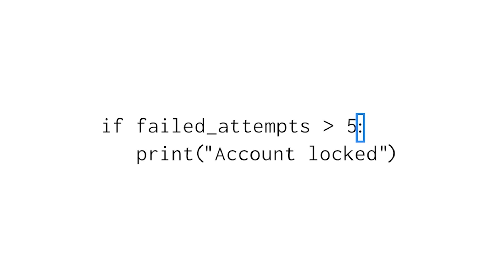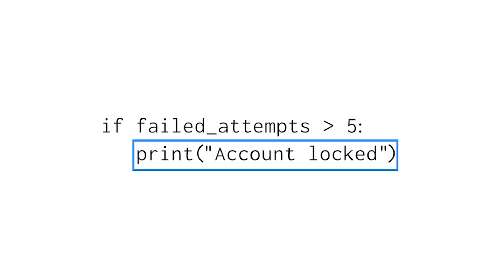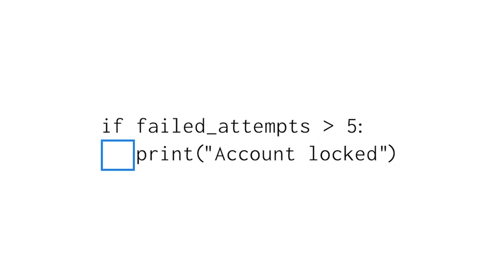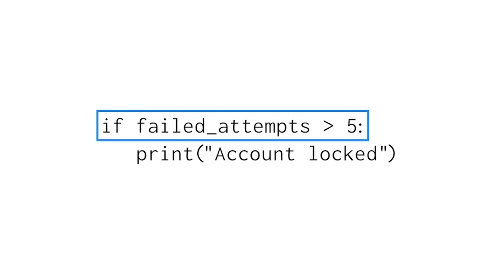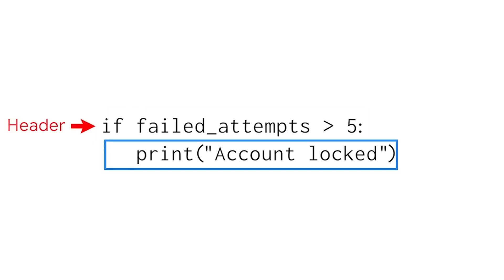After this condition, we always place a colon. This signals that what follows is what we want to happen when the condition is met. In this case, when the user has more than 5 failed login attempts, it prints a message that the account is locked. In Python, this message should always be indented at least one space to execute only when the condition is true. It's common to call this first line the header, and to call the actions that happen when the condition is met the body.